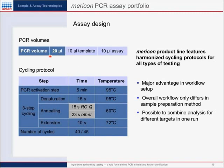The PCR volumes are 20 microliters — 10 microliters of template and 10 microliters of assay or master mix. The cycling protocol has a PCR activation step that happens once in each assay — five minutes at 95 degrees to activate the PCR enzyme. A three-step cycling protocol follows: denaturation for 15 seconds at 95 degrees, annealing for 15 seconds with the Rotor-Gene Q or 23 seconds with other cyclers at 60 degrees C, and an extension step for 10 seconds at 72 degrees. This three-step cycling protocol repeats, with 40 cycles for pathogen detection or 45 for GMO or ingredient authenticity — all harmonized across the portfolio.